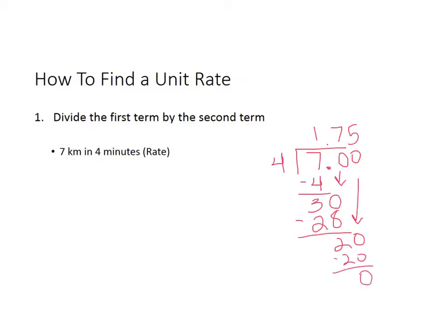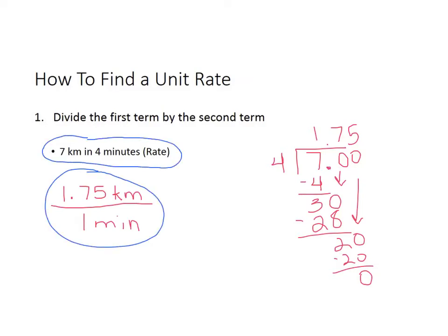So what we just determined is that you are going 1.75 of a kilometer per every one minute. This is the unit rate of this rate. We just broke it down by taking the first term divided by the second term.